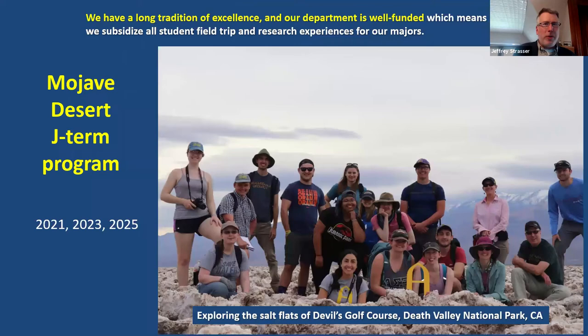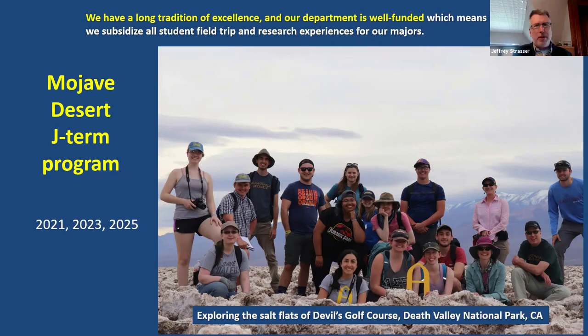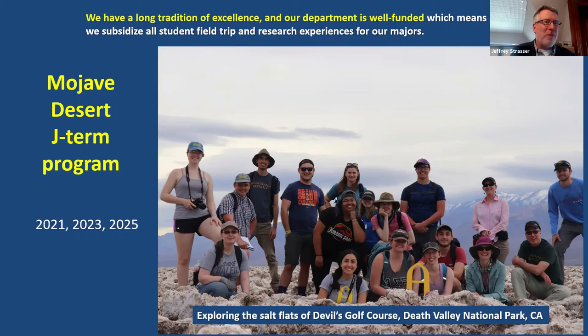The other January term program we'll be offering starting this coming year will be going to the Mojave Desert. We'll be offering two off-campus J-term programs on alternate years — one goes to a foreign country and is a little more expensive, and the domestic one is a little less expensive. We're planning on riding Amtrak down to Southern California and staying at a field station. The pictures here are from Death Valley, California, on a spring break field trip we ran last year, but we'll be going to similar places. This course will emphasize interpreting geology in the field — the structures, how rocks have been folded, stratigraphy, rock types, and interpreting geologic history.